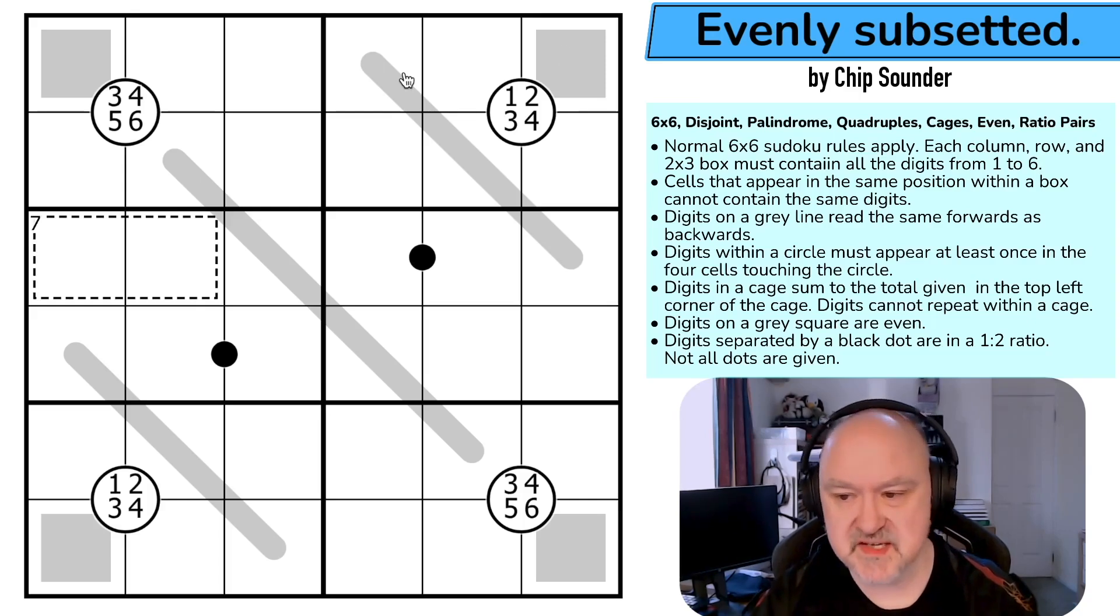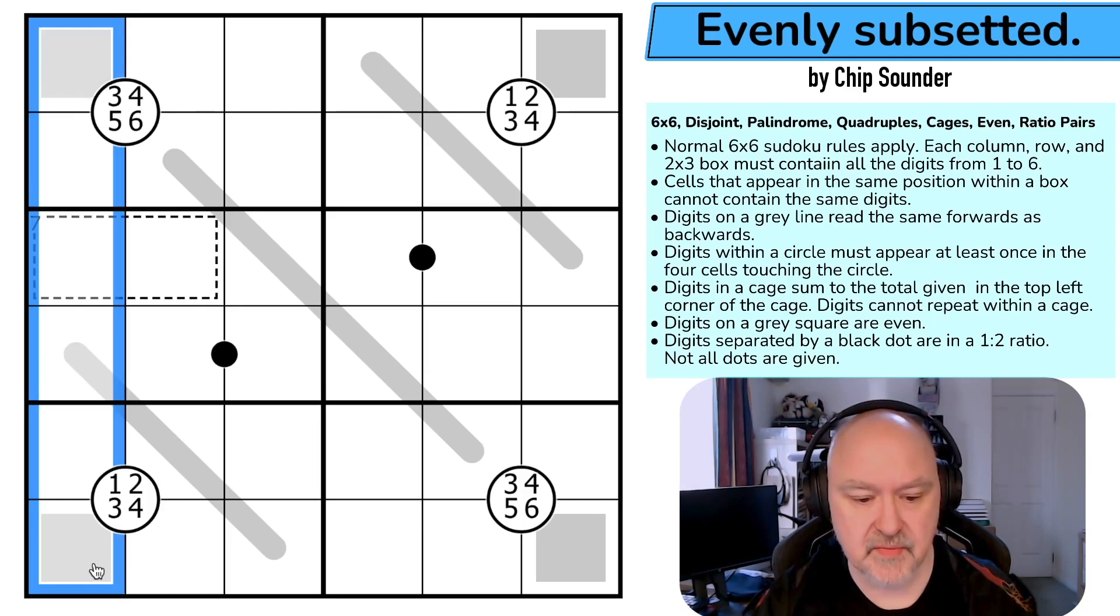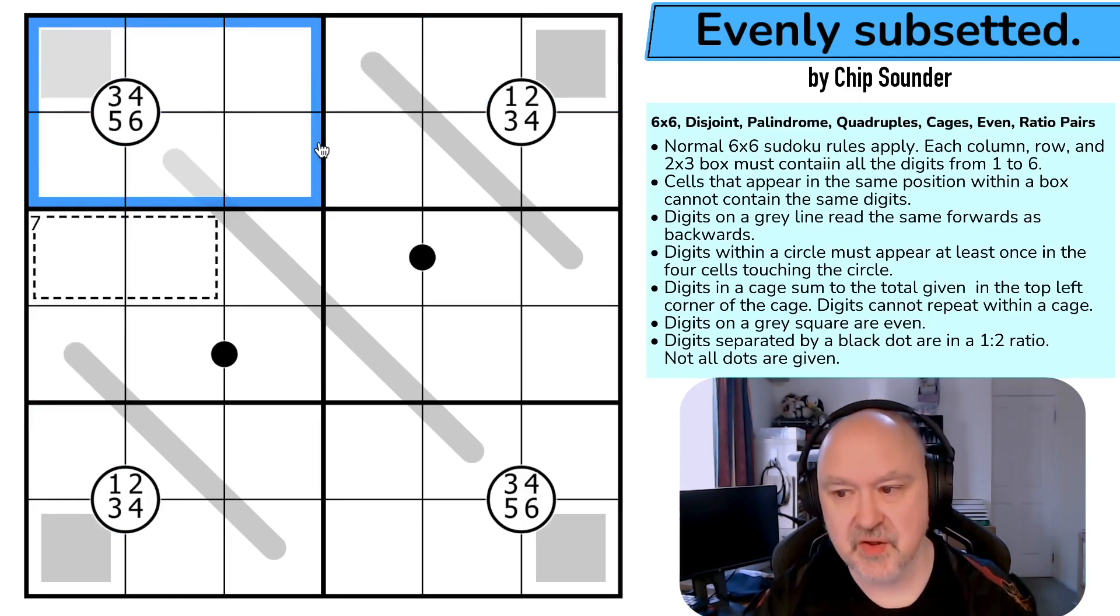We have a link below to the puzzle and to all of the details. Normal 6x6 Sudoku rules apply. Each column, each row and each 2x3 region must contain the digits 1 through 6 without repetition. Digits that appear in the same cells that appear in the same position within a box cannot contain the same digit. This is the disjoint rule.